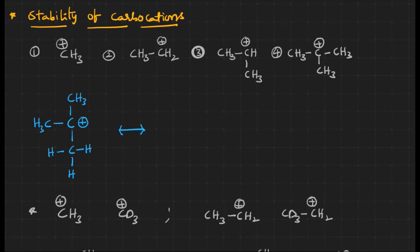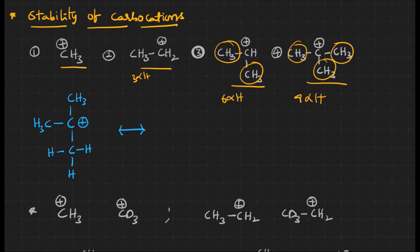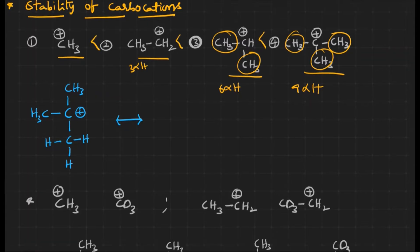Now let us see the stability of carbocations according to hyperconjugation. For methyl, ethyl, propyl, and isobutyl carbocations: the ethyl case has three alpha hydrogens, propyl has six, and isobutyl has nine alpha hydrogens. As the number of alpha hydrogens increases, the number of hyperconjugations increases and the stability of the carbocation increases. So the stability order is: tertiary > secondary > primary > methyl.